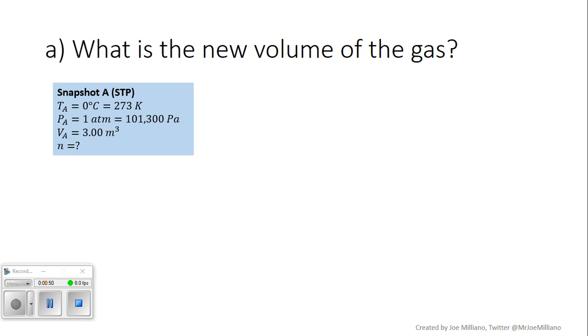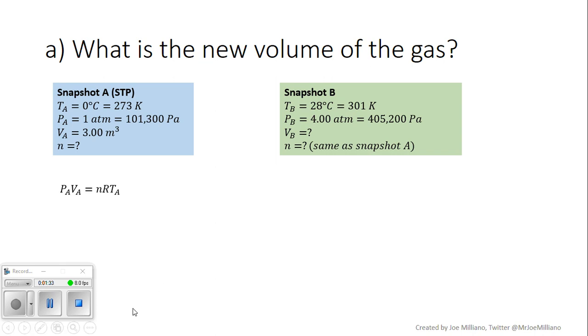Let's start with the new volume of the gas. To do this we're going to lay out what we know. These are the initial conditions of the gas. You have the temperature which is STP so that's 273 Kelvin. The pressure is one atmosphere which is 101,300 Pascals and then 3 meters cubed. In the second situation we have a different temperature, 28 degrees Celsius so that's 301 Kelvin. The pressure has increased and we want to know the volume. It's the same sample of gas so we know that N, the number of moles, is the same. We're going to use the things we know from snapshot A to figure out how many moles.